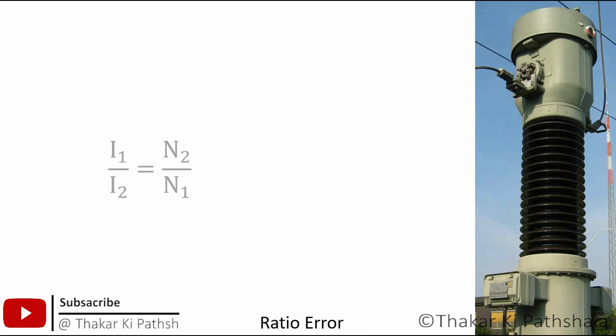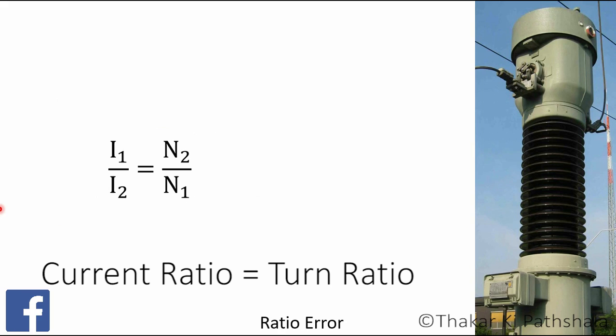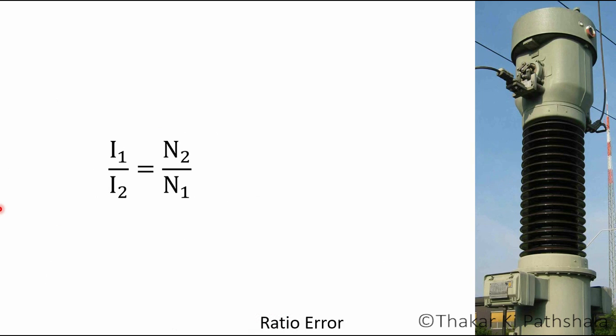Let's take a look at ratio error. We all know this famous transformation equation for any transformer, which is I1 divided by I2 is equal to N2 divided by N1. So theoretically current ratio should be in proportion to the turn ratio of transformer. But in practice, it is not so.